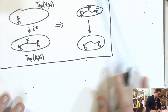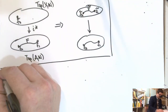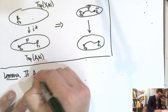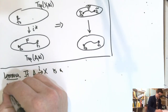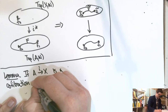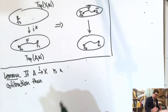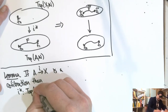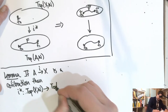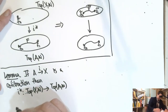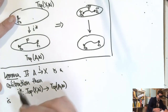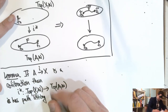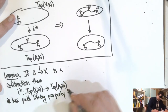What we proved is: if A into X is a co-fibration, then the restriction map i-star from Top(X, W) to Top(A, W) has the path lifting property, for every space W.